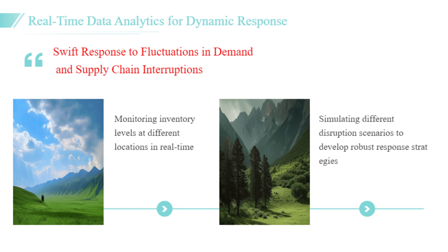For instance, a retail giant utilized predictive models to anticipate fluctuations in demand during holiday seasons, allowing them to manage inventory more efficiently and prevent stockouts. By identifying single points of failure within supplier networks, organizations can make informed decisions to bolster their resilience, ensuring continuity in their supply chain operations.